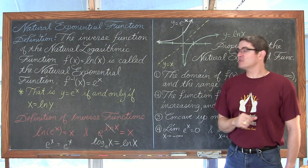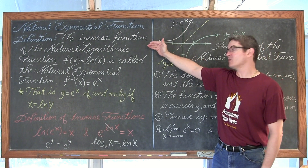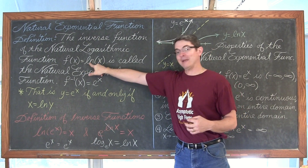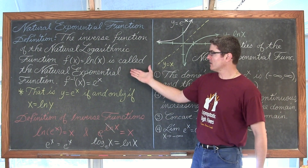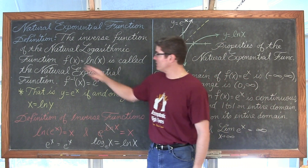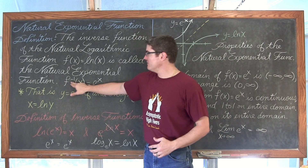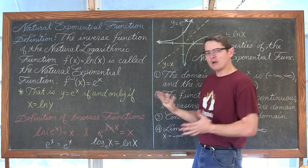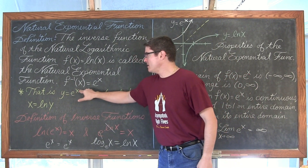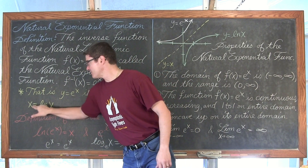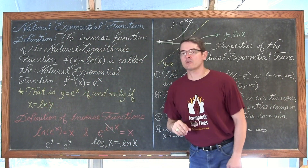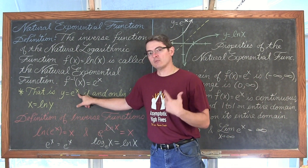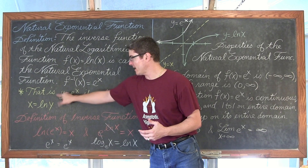The natural exponential function is the inverse of the natural logarithmic function f equals the natural log of x, or log base e of x. If f equals the natural log of x, the inverse of f is equal to e to the x. They are inverse functions. We can also say: y equals e to the x if and only if x equals the natural log of y.